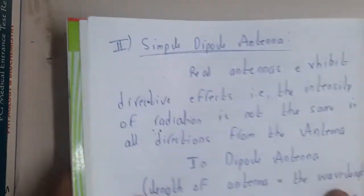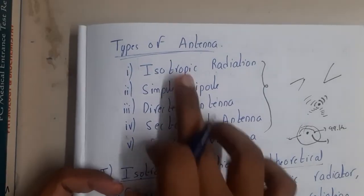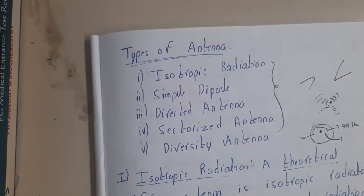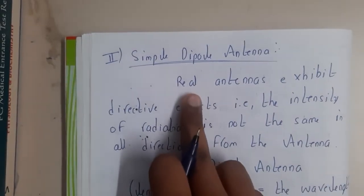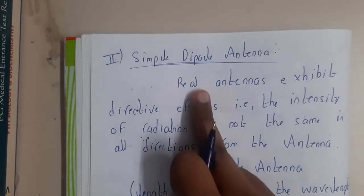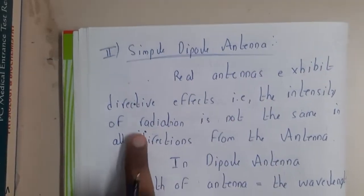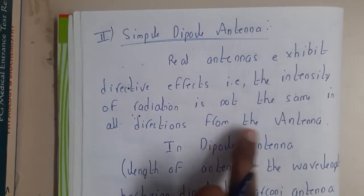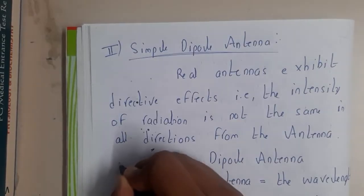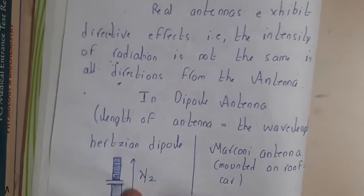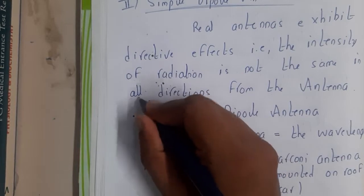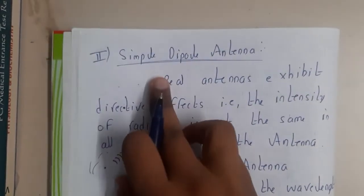Now let us move to the second type: the simple dipole antenna. It is a real antenna that exhibits a directive effect — the intensity of radiation is not the same in all directions. Unlike the isotropic antenna where signal strength is the same in all directions, the simple dipole does not do that. It radiates in one particular direction.